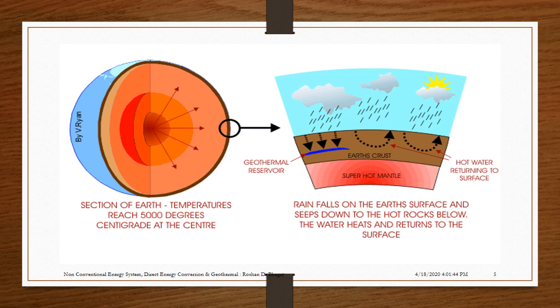The animation shows the core section of Earth. The temperature reaches 5000 degrees Celsius at the center.